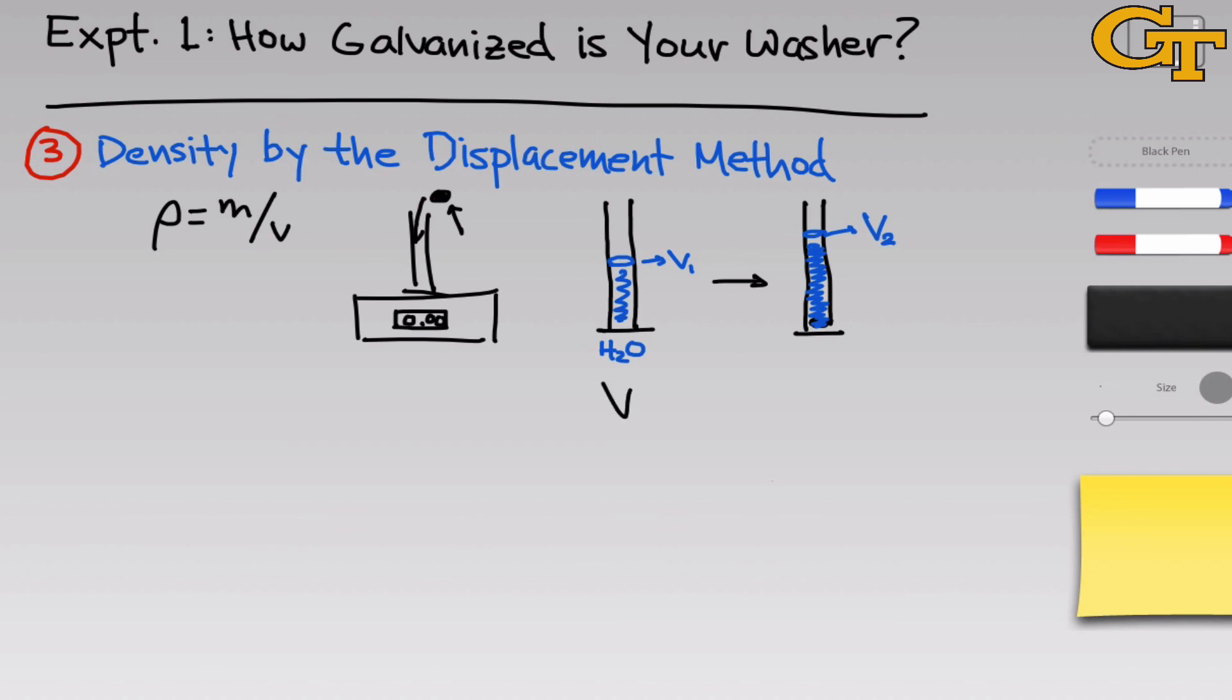We can simply say that the volume of the washer that we added is equal to the difference between the final volume shown by the water, which is really the combined volume of the water and the sample, minus the initial volume V1. If we apply this method on top of a balance so that we're getting a mass at the same time, we can see that the overall density of the sample, in this case a washer, is just equal to the mass measured by the balance divided by the volume difference V2 minus V1.